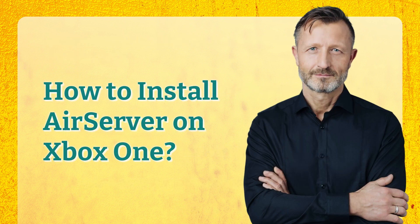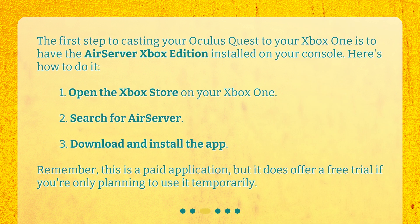How to install AirServer on Xbox One? The first step to casting your Oculus Quest to your Xbox One is to have the AirServer Xbox Edition installed on your console. Here's how to do it: 1. Open the Xbox Store on your Xbox One. 2. Search for AirServer. 3. Download and install the app. Remember, this is a paid application, but it does offer a free trial if you're only planning to use it temporarily.